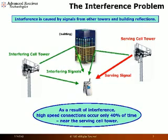A well-known limitation of all cellular systems is intercellular interference. The large and rapidly expanding 3G network is no exception. At any one time, a handset is typically in range of two or three base stations or cell towers, but the user is only interested in the signal from one base station. The signals from the other base stations become interference that limits the data rate to the user and the overall network capacity.